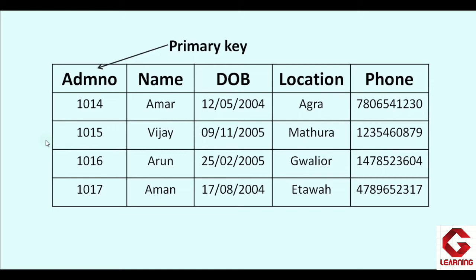Here admission number column is set as the primary key because of two reasons matching those two properties. Now why is admission number chosen and not name, DOB, location, or form? Because in a class two or more students may have the same name, so repetition is possible — and a primary key column cannot have repeated values. Therefore the name column cannot be set as the primary key.